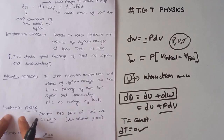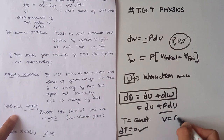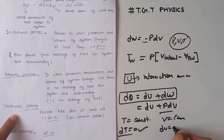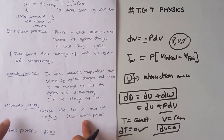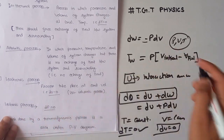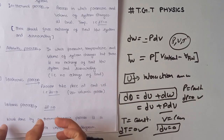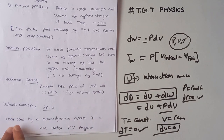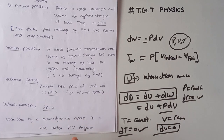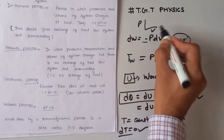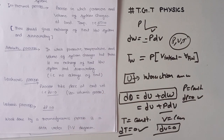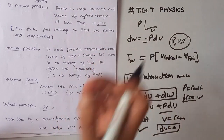What is an isochoric process? An isochoric process is one in which the volume of the system is constant, so dV = 0. It is also known as an isovolumic process. What is an isobaric process? It is a process in which pressure is constant, so dP = 0. The area under the PV graph represents the work done by a thermodynamic process.